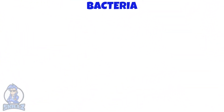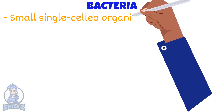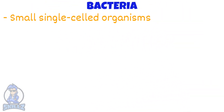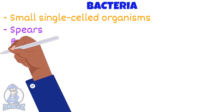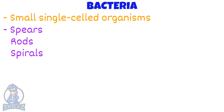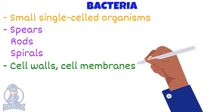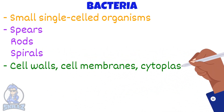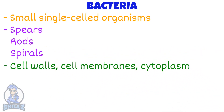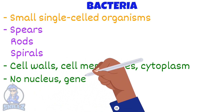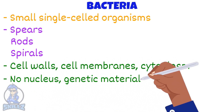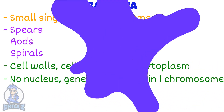Bacteria are tiny single-celled organisms, smaller than 5 micrometers. Bacteria come in 3 different shapes: spheres, rods and spirals. But they have similar features. All bacteria have cell walls, cell membranes, and the insides are filled with cytoplasm. However, bacteria have no nucleus. Instead, they have genetic material on a single chromosome.